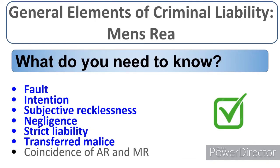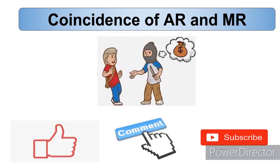Hopefully you've understood transferred malice — it's fairly straightforward. The next section will be on coincidence between actus reus and mens rea.